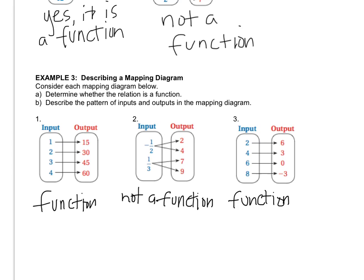All right, so now let's go back to number one and let's figure out the pattern that exists between the inputs and the outputs. Here's how you figure that out. You look down the input column and you see what's happening. So the inputs are going up by 1. The outputs are increasing by 15. So that's really what the sentence says. As the input goes up by 1, the output goes up by 15.